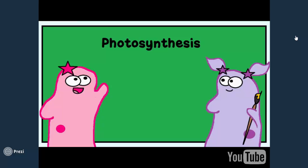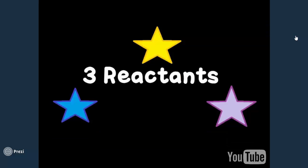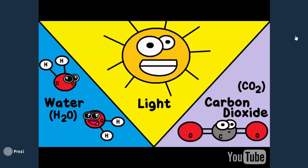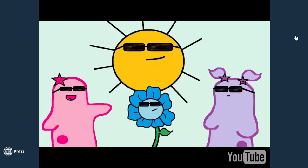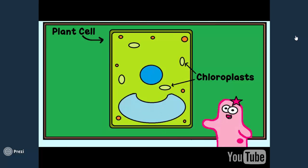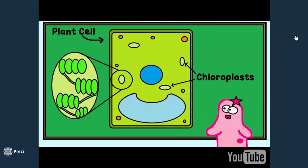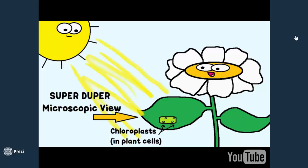Photosynthesis needs three major reactants to work: water, light, and carbon dioxide. We've already discussed how a plant gets water, depending on whether it's vascular or non-vascular. As for sunlight, plant cells have organelles called chloroplasts — the site of photosynthesis — which help capture light energy for the photosynthesis process.